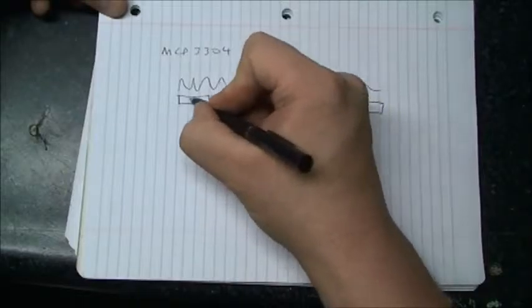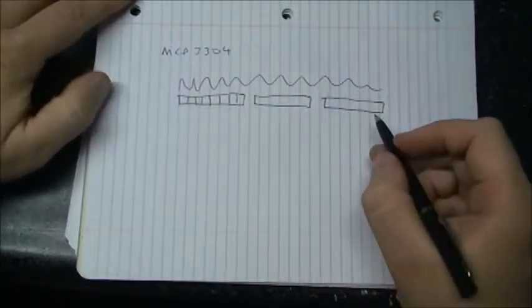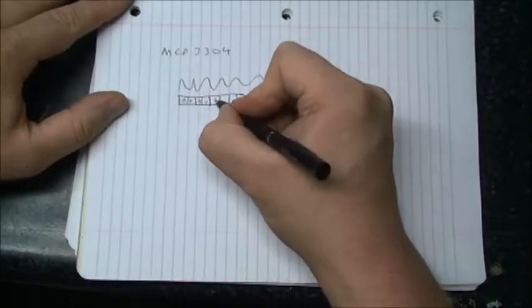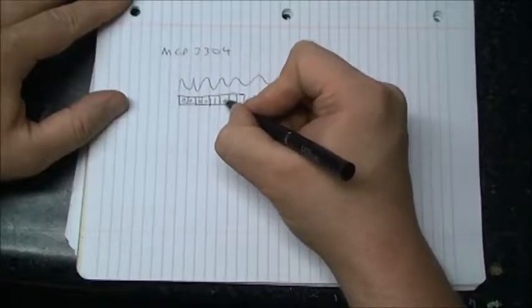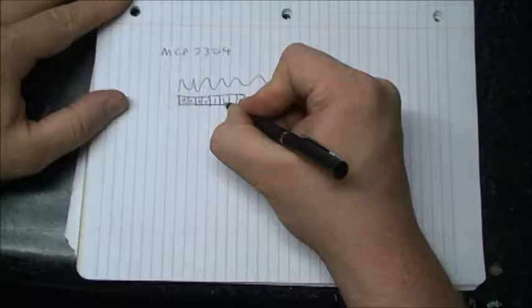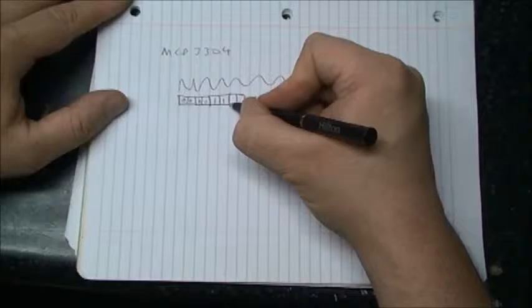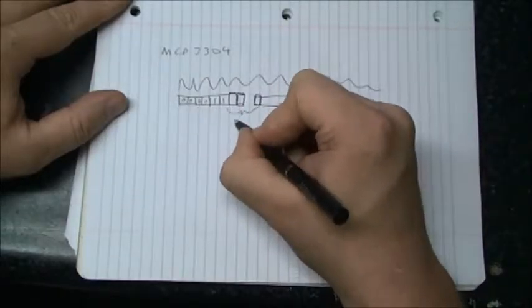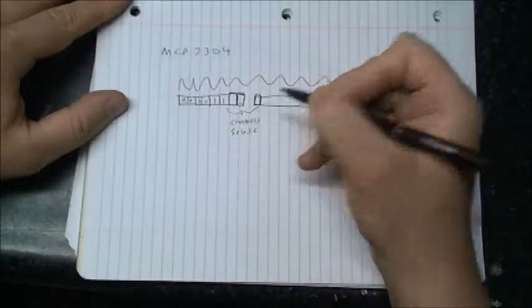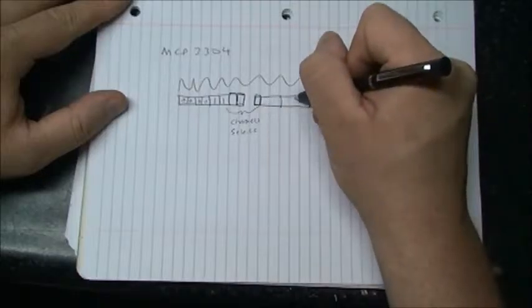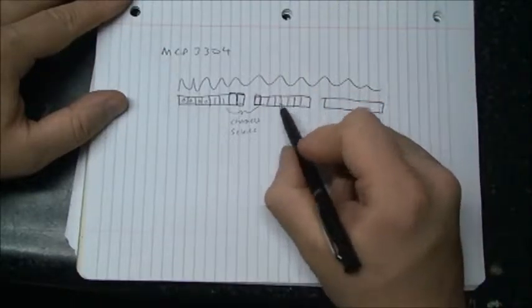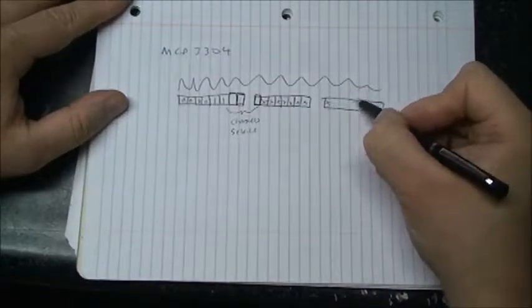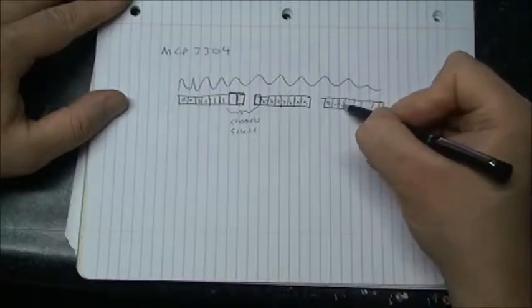Now, with the MCP3304, you'd be clocking in, basically the first four bits are zero, and then you've got a start bit. And then you have a bit to select single or differential. I believe one is for the single mode. And then what you have here, these two bits and the first bit of the next byte, this is your channel select. And then basically all these other bits going out are ignored.